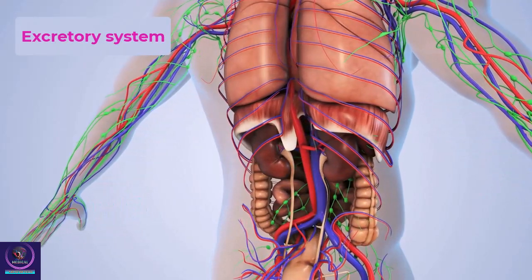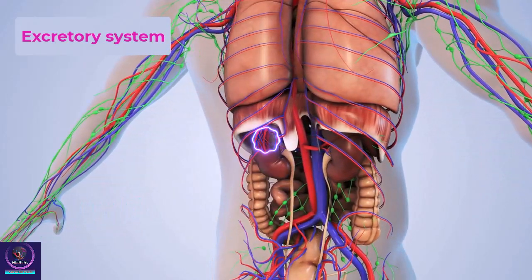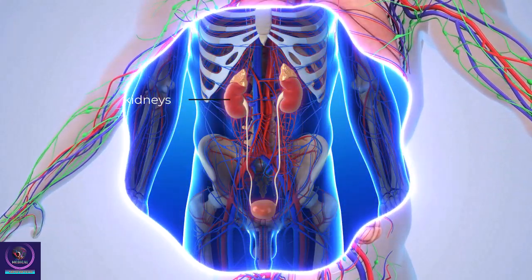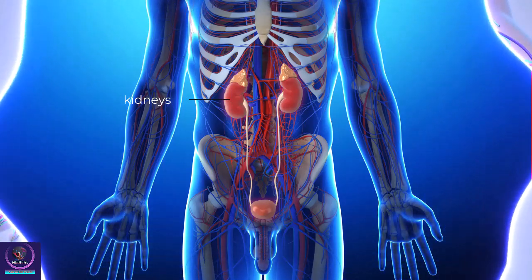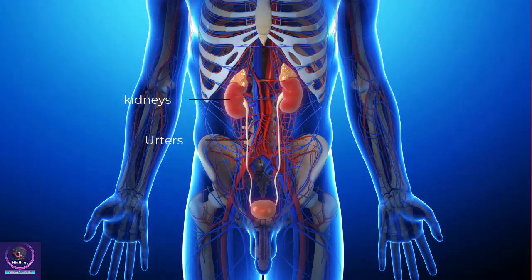The excretory system in humans consists of a pair of kidneys, one pair of ureters, a urinary bladder, and a urethra.